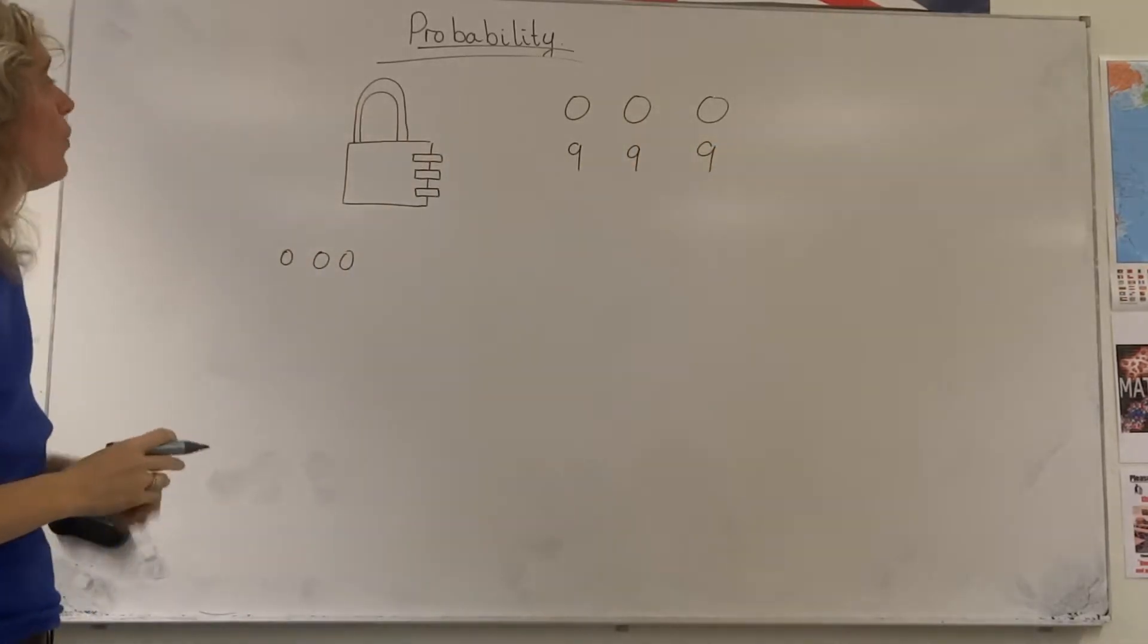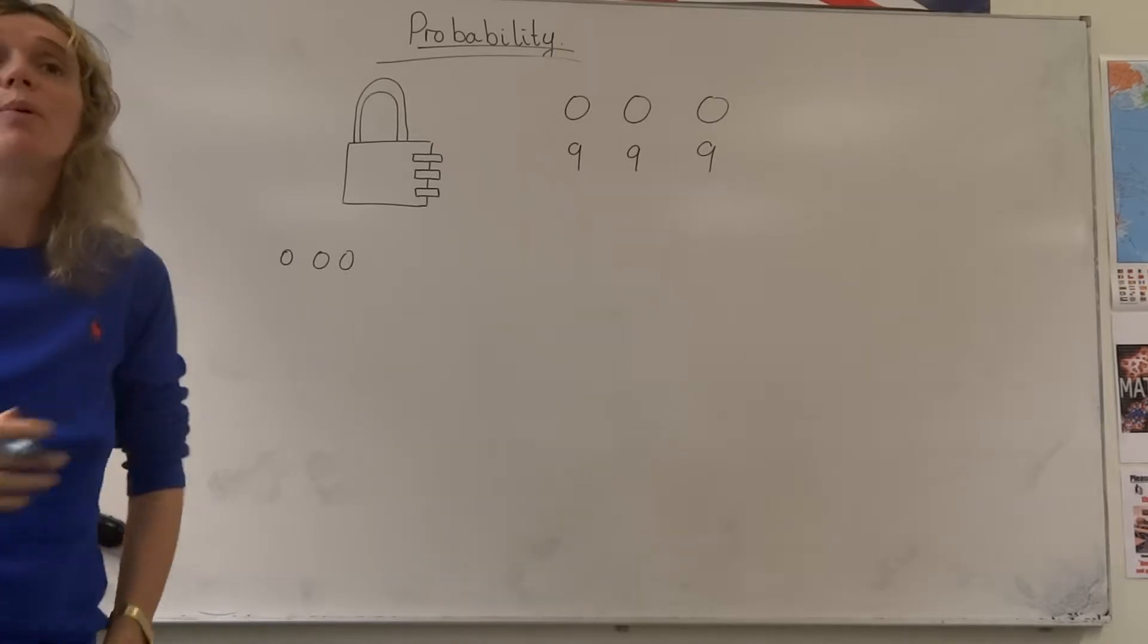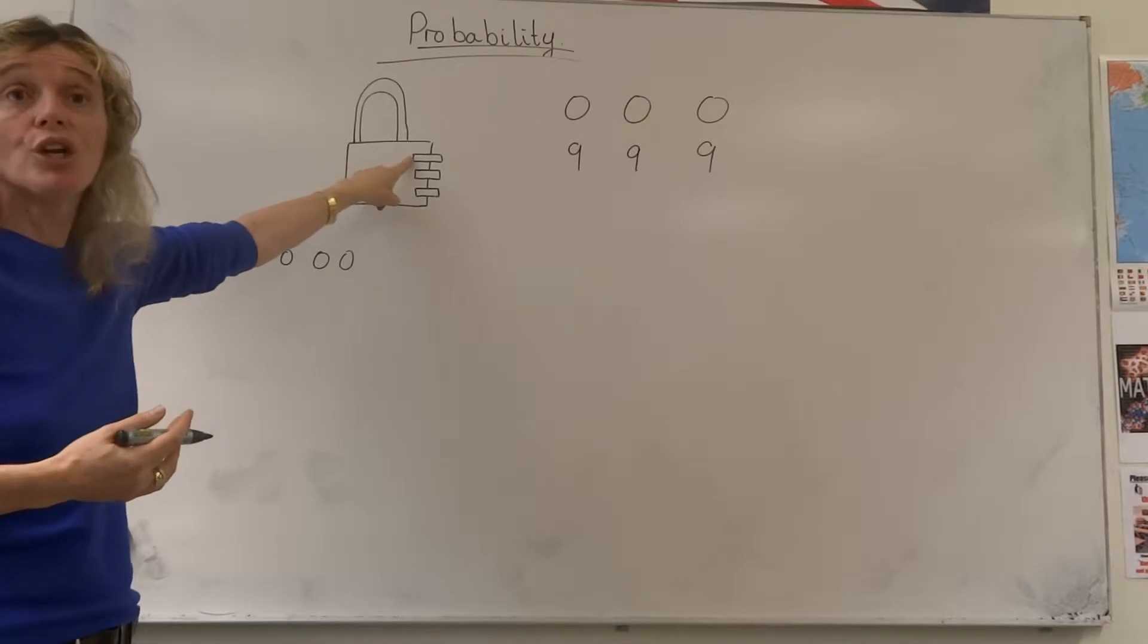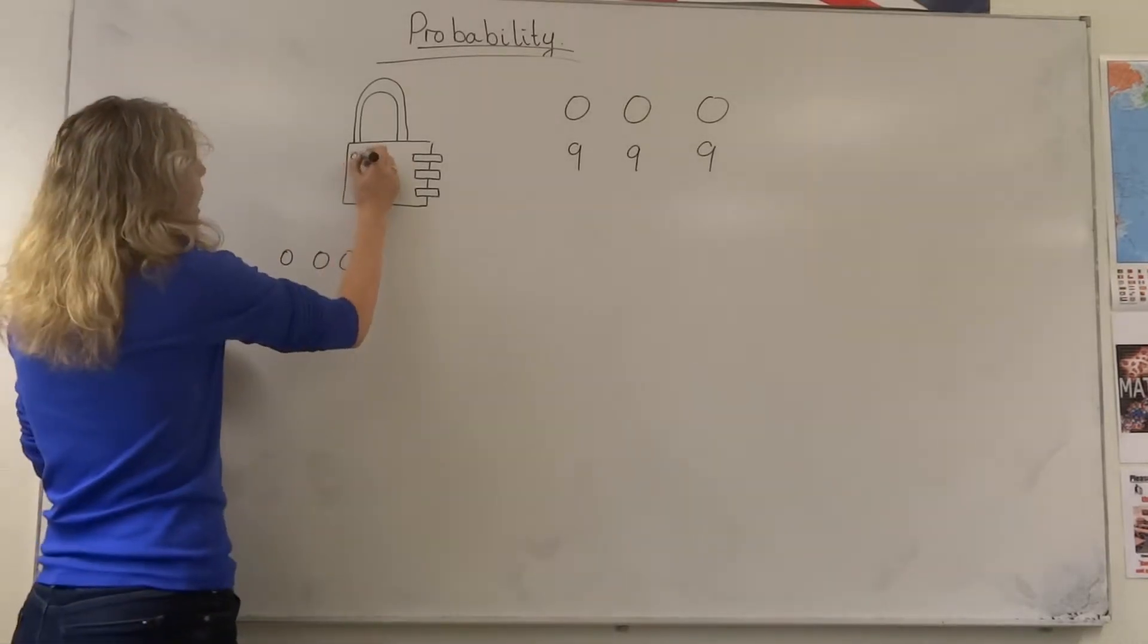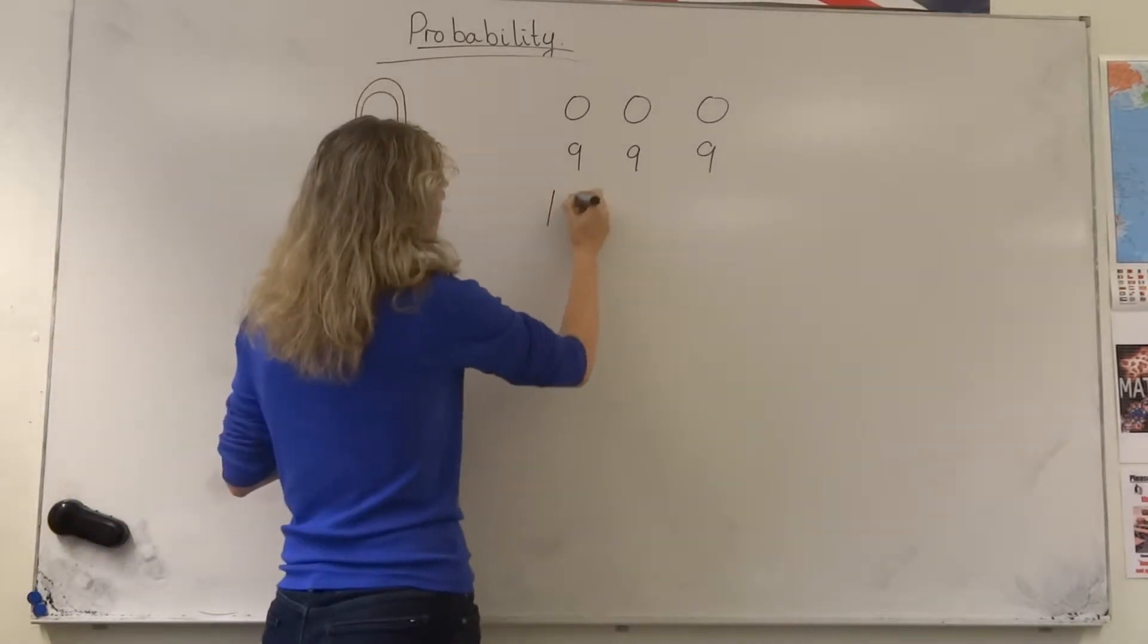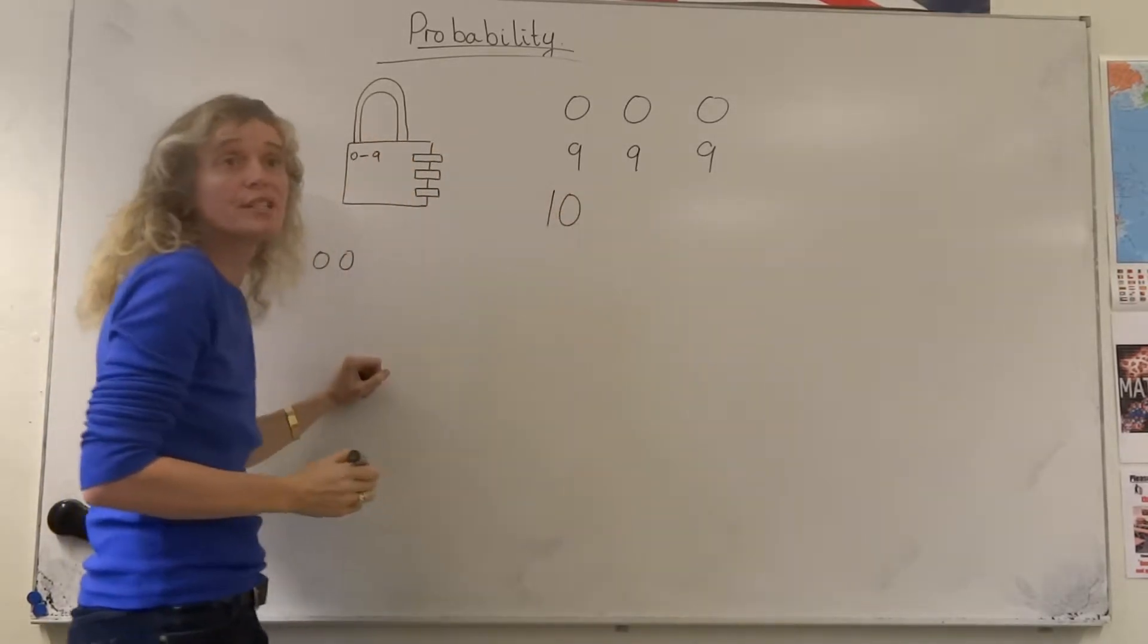The way that I work out what the probabilities, what the different numbers of combinations are, I think, how many different numbers could I use on the first one? I could use any numbers from 0 to 9. That gives me 10 possibilities for the first set of numbers.